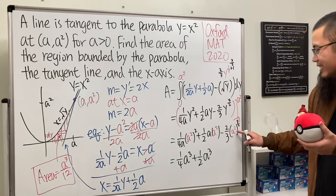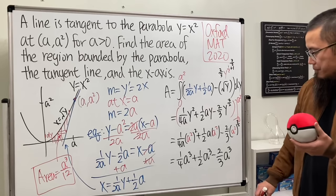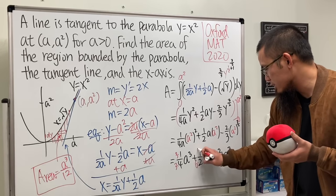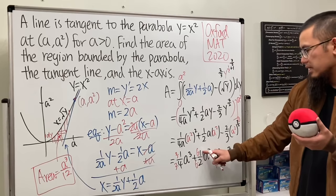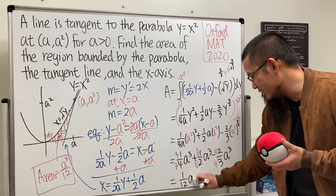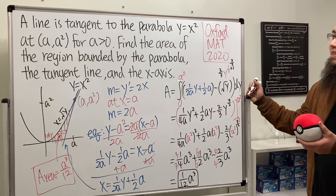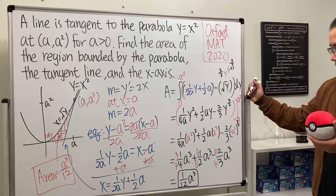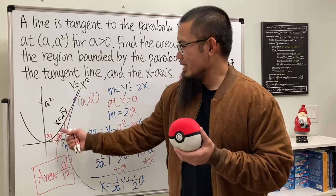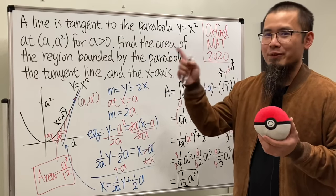Now collect the a³ terms: find a common denominator of 12. Multiply coefficients accordingly: 3 + 6 − 8 = 1, giving 1/12. So the area equals a³/12. It's fascinating how everything works out to a single a³ term in this two-dimensional problem. If you want to know more about why that's interesting, check out the linked video.